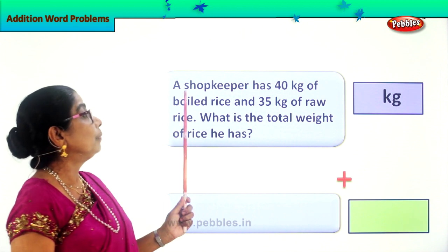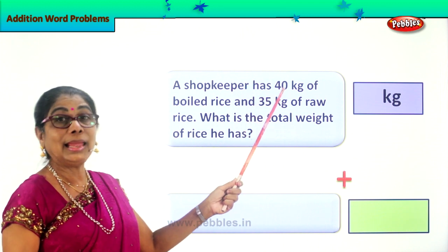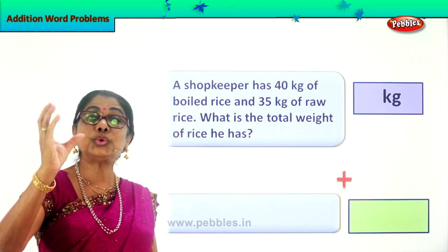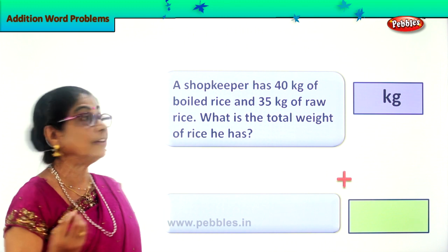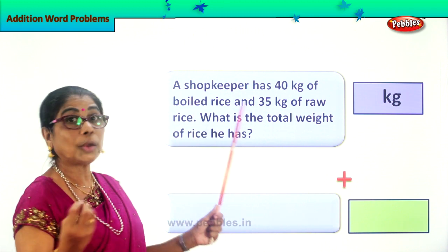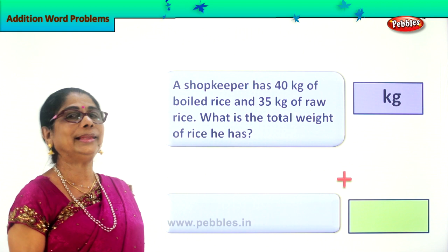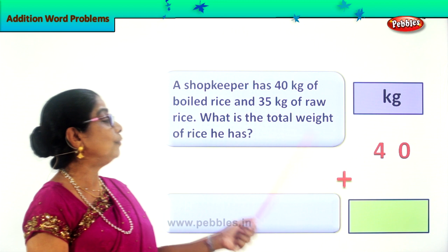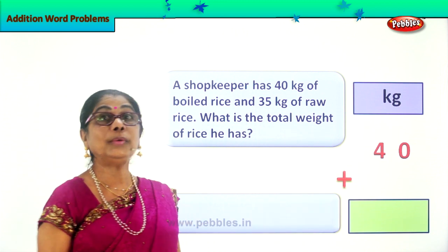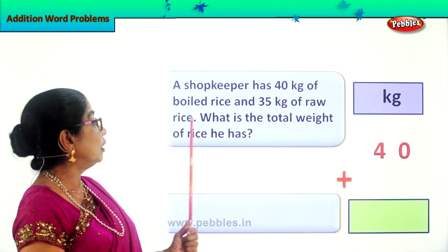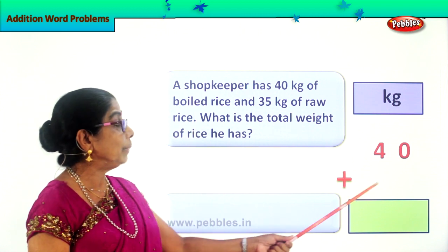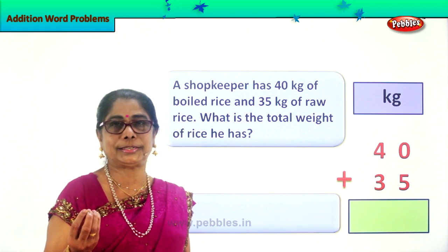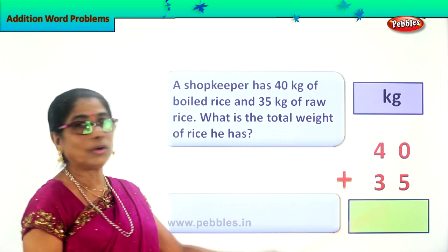Now, the amount of boiled rice the shopkeeper has — what is the total weight? The total weight of boiled rice the shopkeeper has is 40 kg. That is the weight of boiled rice, 40 kg. Now he has raw rice too. Weight of raw rice: a shopkeeper has 40 kg plus 35 kg. So we are going to find the total weight. Boiled rice, raw rice.